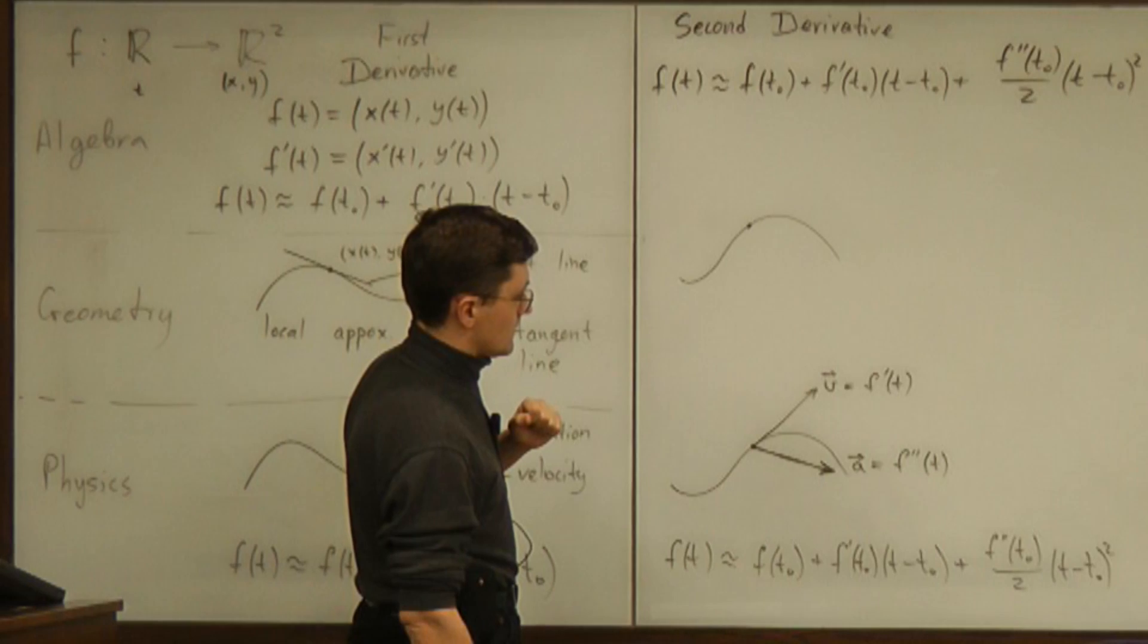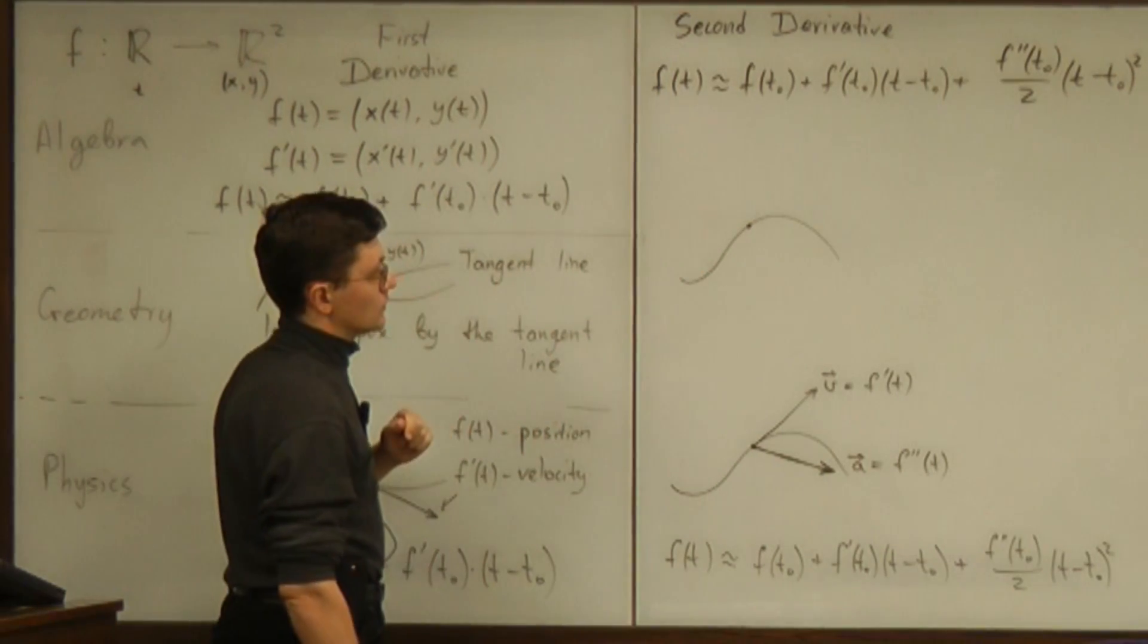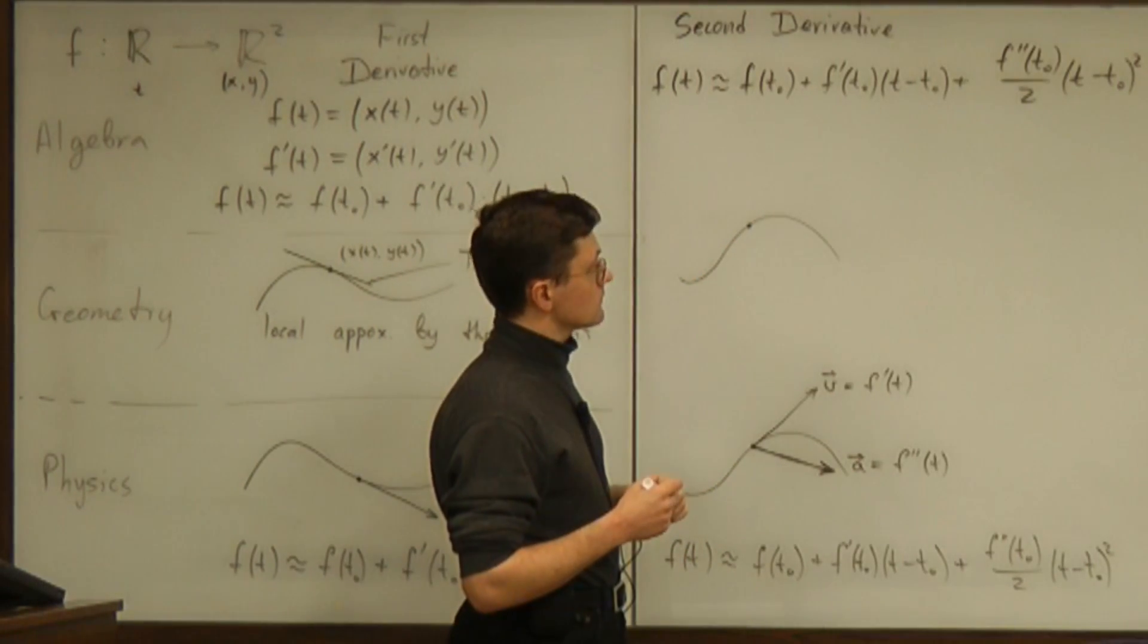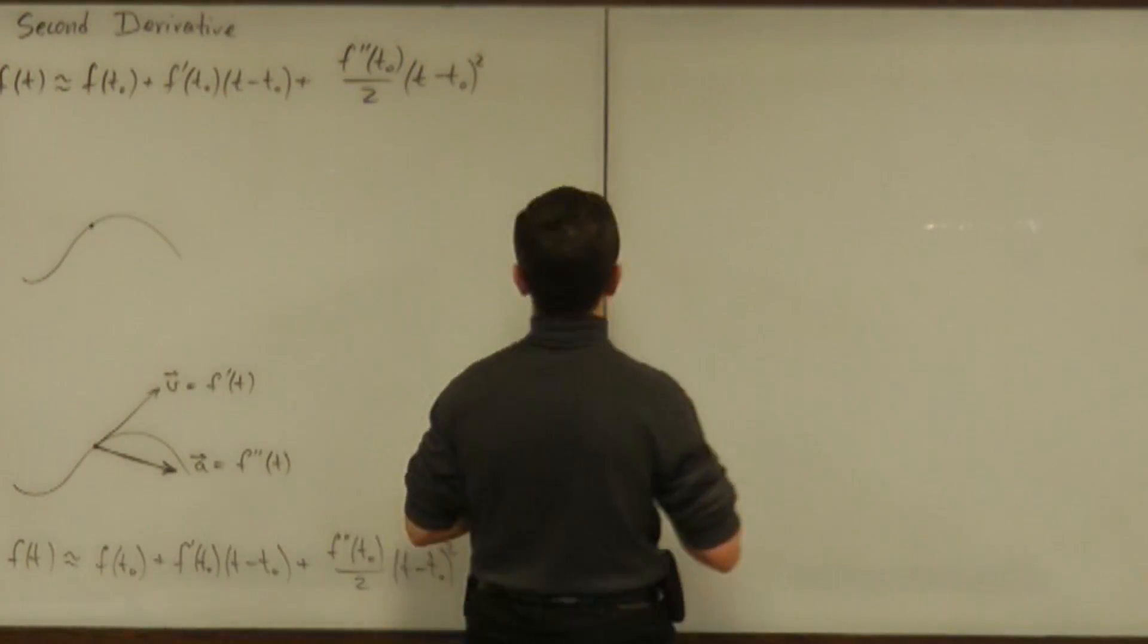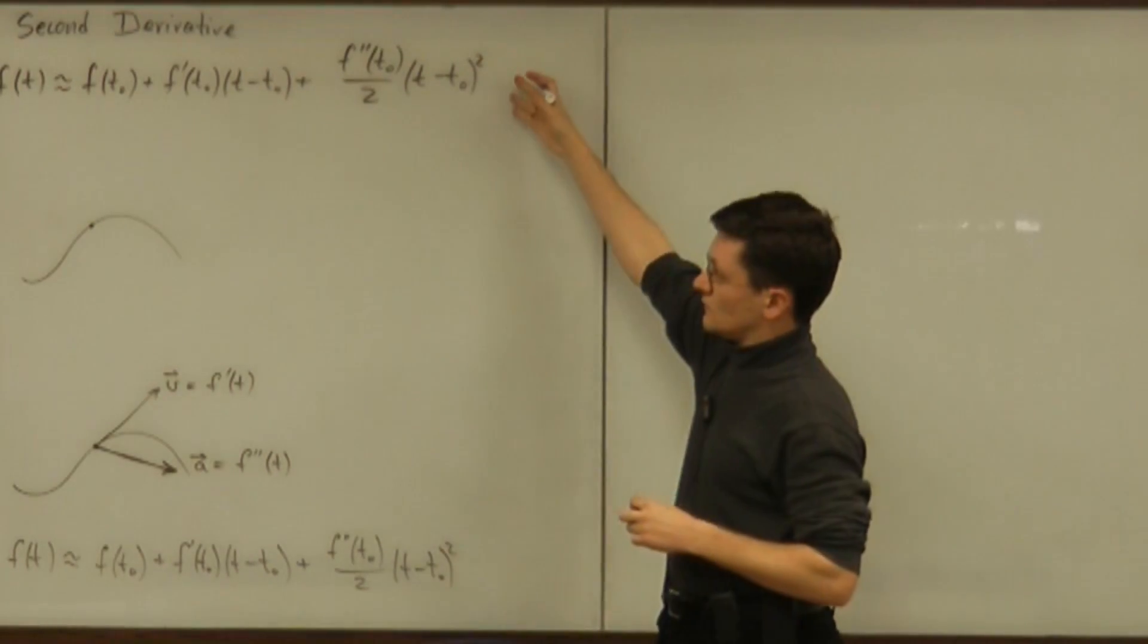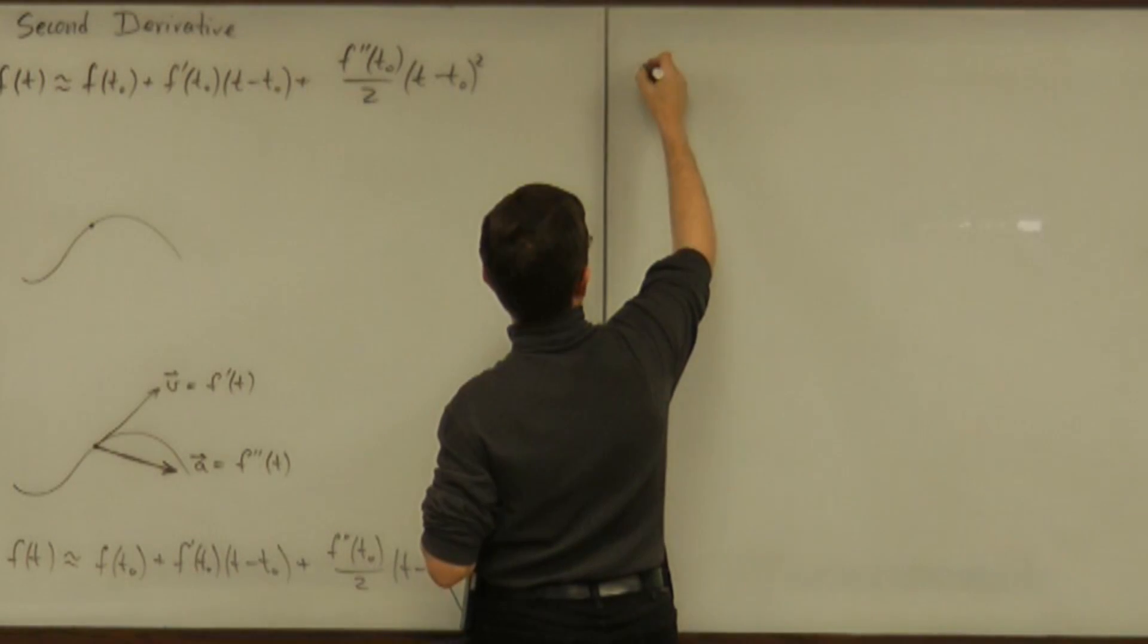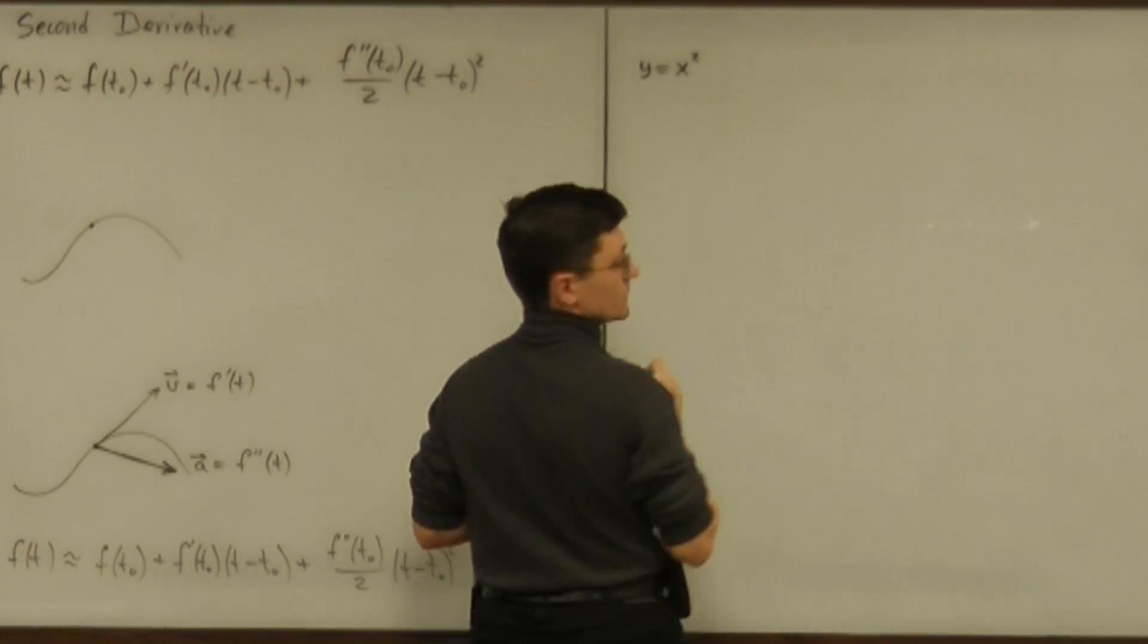So coming back to geometry, what should we look for as second degree approximation? Inspired by either algebra or physics, we can think about the simplest second degree function. And that would be something like y equals x squared.